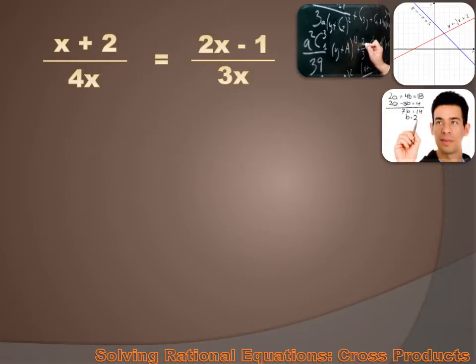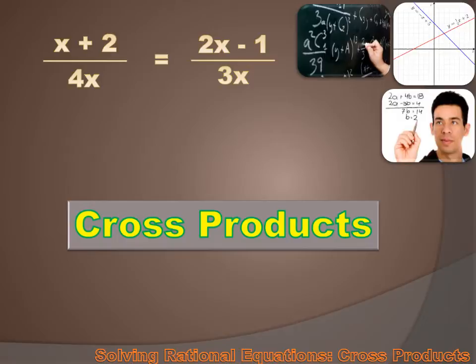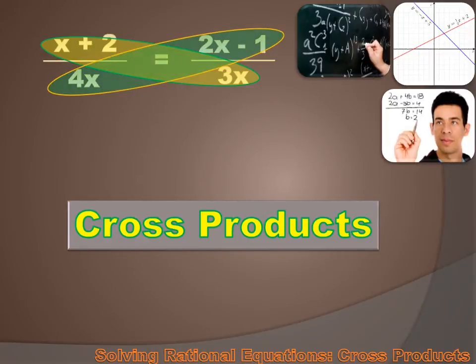There are two ways we're going to discuss for solving rational equations, and the first you've used before. When we were dealing with proportions, we used cross products to solve these proportions, and we can use it with any rational equation. You remember cross products — we take the numerator from one side of the equation and multiply it times the denominator of the other side.